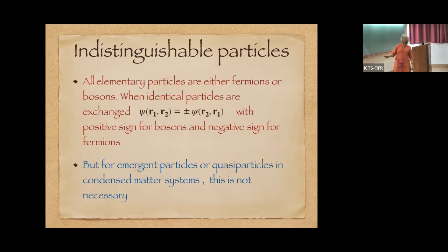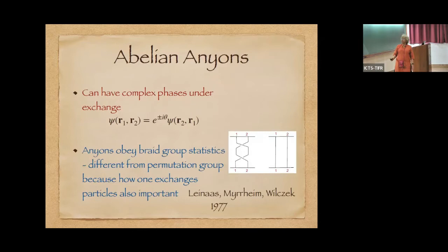But for emergent particles or quasiparticles in condensed matter systems, this is not necessary. One can get sometimes when you exchange two particles, an arbitrary phase. And the interesting thing about these anyons is that they're not just classified under the permutation of these two particles, but under something called the braid group statistics, which is different from the permutation group, because how one exchanges the particles becomes important, whether you do a clockwise or an anticlockwise exchange, because they will give opposite signs.